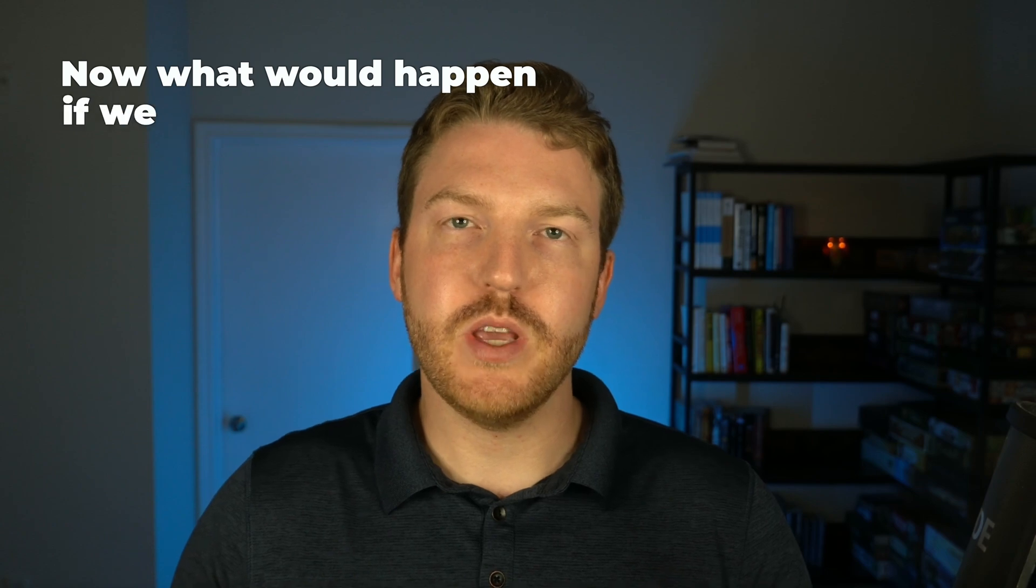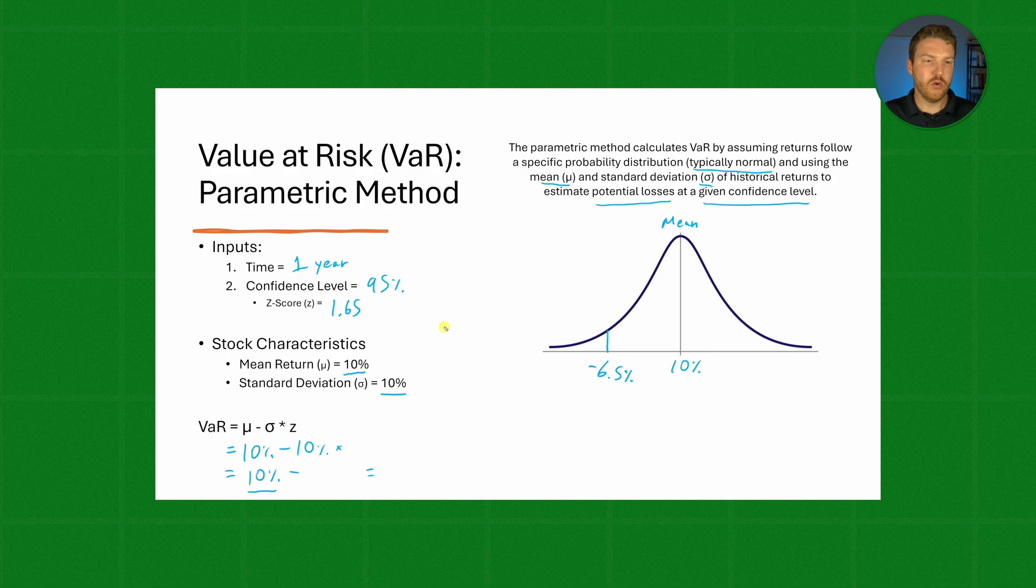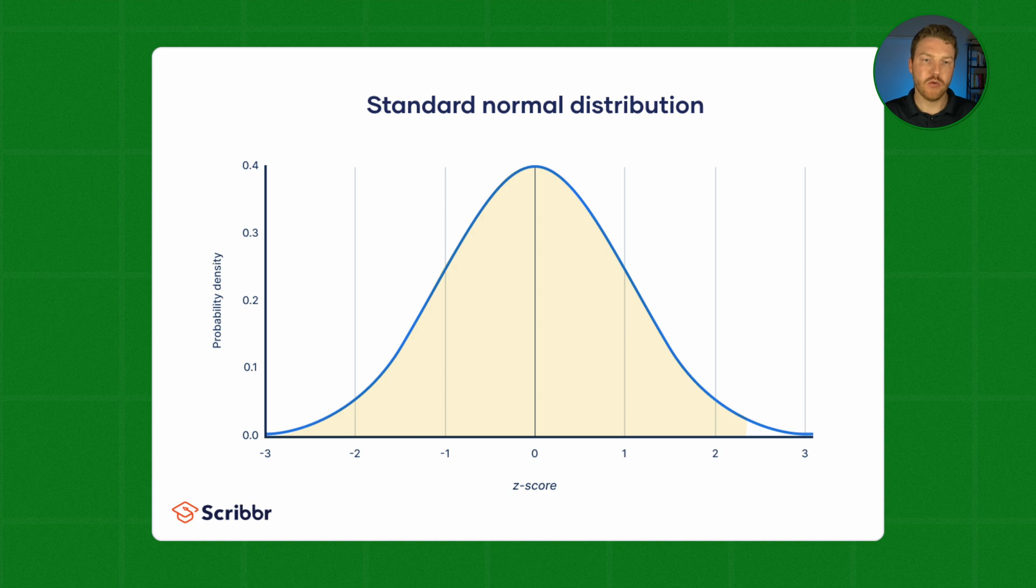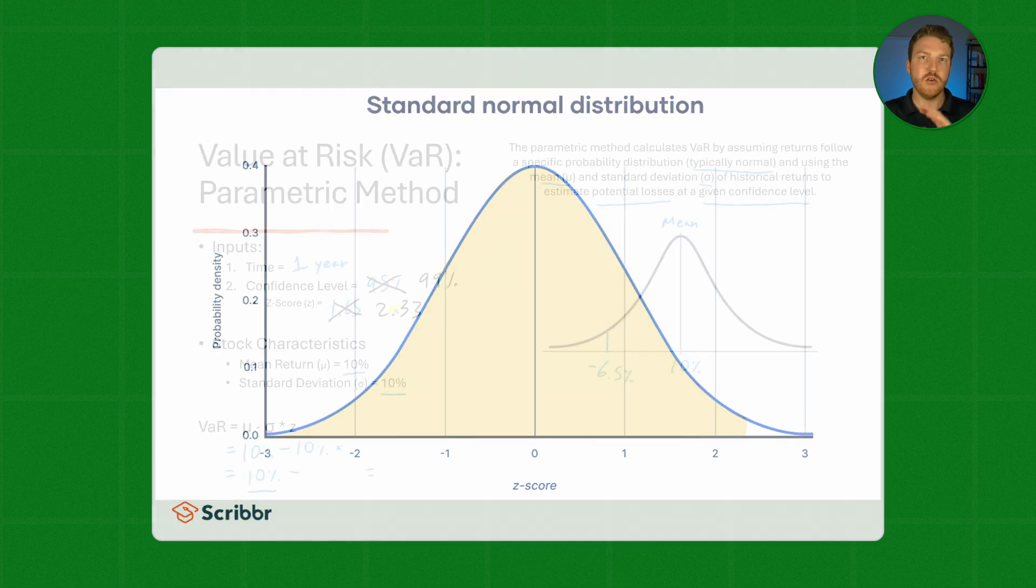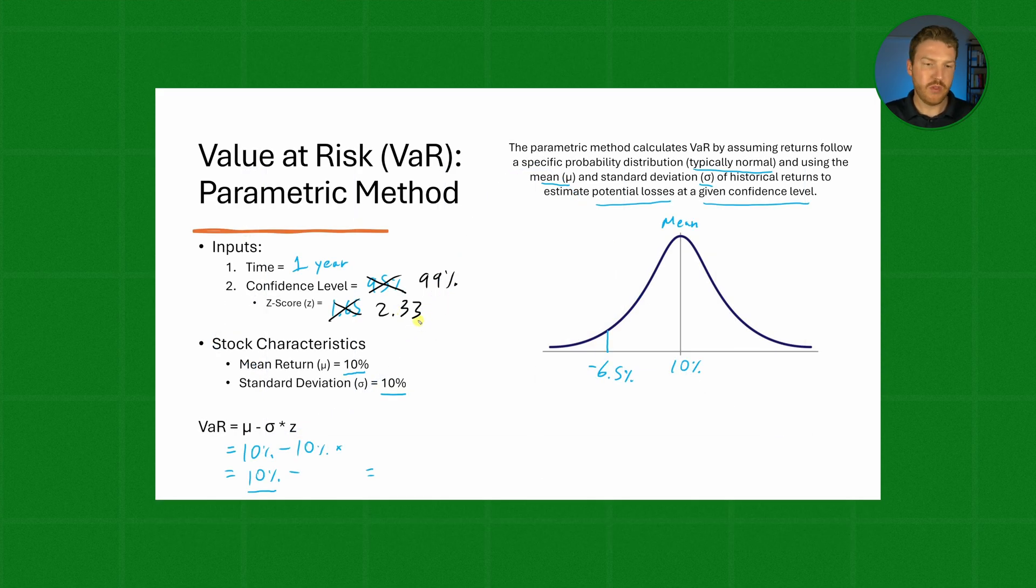Now what would happen if we increased our confidence level, meaning we moved further out into the tail? Well let's say instead of doing a 95% confidence level we did a 99% confidence level. That would increase our z-score from 1.65 up to 2.33. You can check any standard one-tailed z-score table for that number.